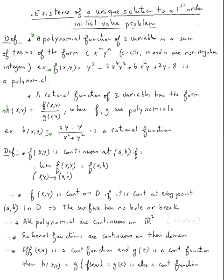What do we mean by a function of two variables continuous at a point? We mean that the limit of f(x, y) as (x, y) approaches a point equals f at that point. A function continuous on a region D means it's continuous at every point in that region — the surface has no hole or break. All polynomials are continuous on R², the xy-plane. Rational functions and composite functions are continuous on their domains.